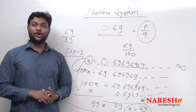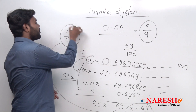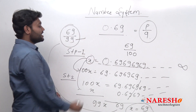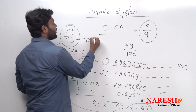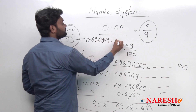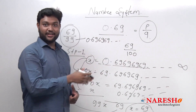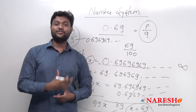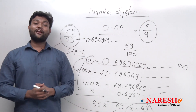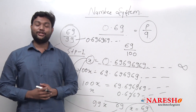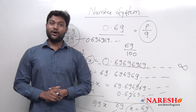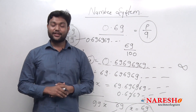If you check on a calculator: 69 upon 99, you will be getting the answer 0.696969696969. Check it if you don't trust me. My dear students, so this is a simple way for number system. I hope you liked this video. Thank you for watching. Thank you so much.